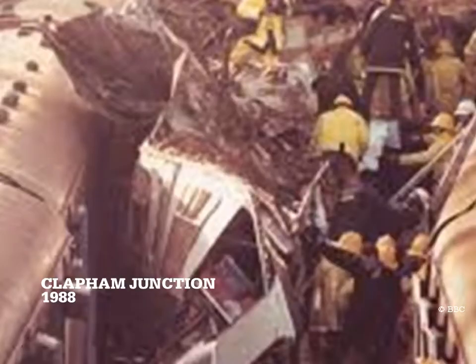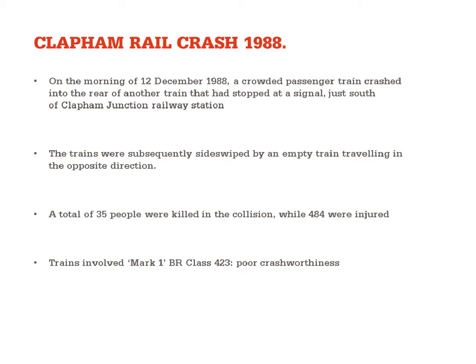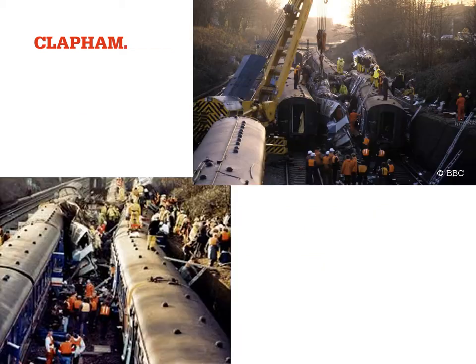I'm going to look at Clapham Junction, which happened in 1988. On the morning of 12th December 1988, a crowded passenger train crashed into the rear of another train that had stopped at a signal just south of Clapham Junction station. The trains were then subsequently sideswiped by an empty train travelling in the opposite direction. A total of 35 people were killed and 484 were injured. The trains involved were Mark 1 rolling stock and it was identified that these had very poor crashworthiness — you can see from the pictures there was severe damage done to the trains and very little survival space.